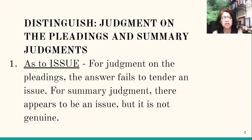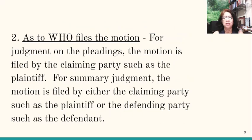The first point of distinction is as to the issue. By now you should be familiar with the difference between failure to tender an issue and there does not appear to be a genuine issue. So for judgment on the pleadings, the answer fails to tender an issue. For summary judgment, there appears to be an issue but it is not genuine.